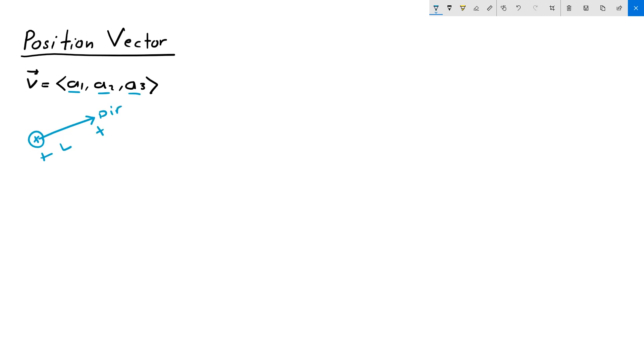So for example, given a 3D coordinate system, this is the x direction, this is the y direction, and this is the z direction. Each coordinate system has an origin point, and that point has coordinates 0, 0, 0.